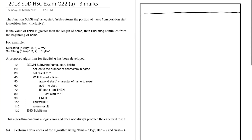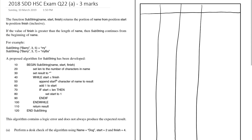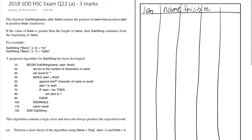We'll add five columns to the table and list our variables. Based on the HSC exam answers, the variables are: len, name, finish, result, and start.